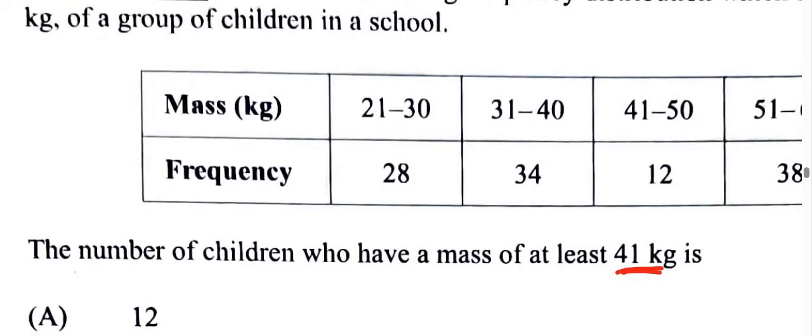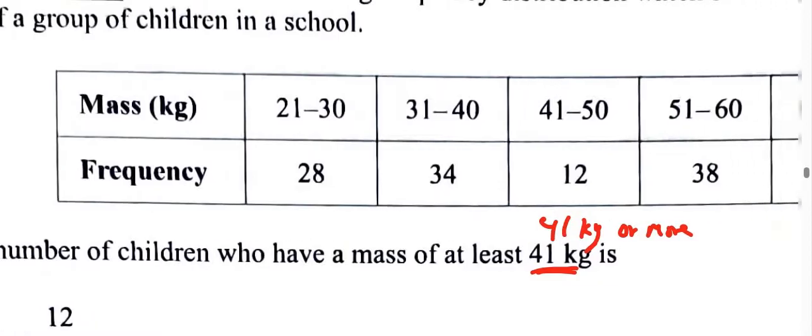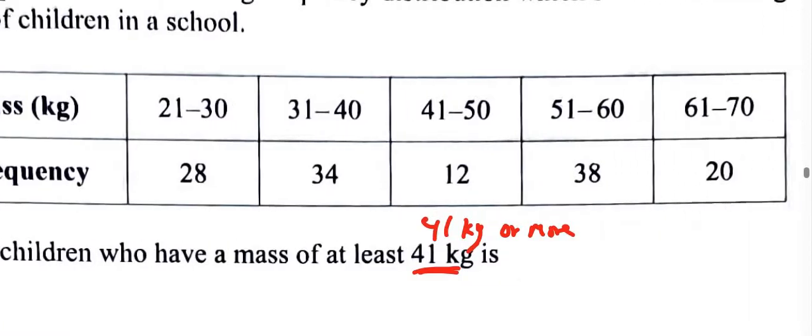In this case we're talking about 41 kg or more. The number of students who have a mass of at least 41 kilograms starts from this point here or more, right up to this point. So we basically add these: 12 plus 38 that's 50, plus 20 that's 70.